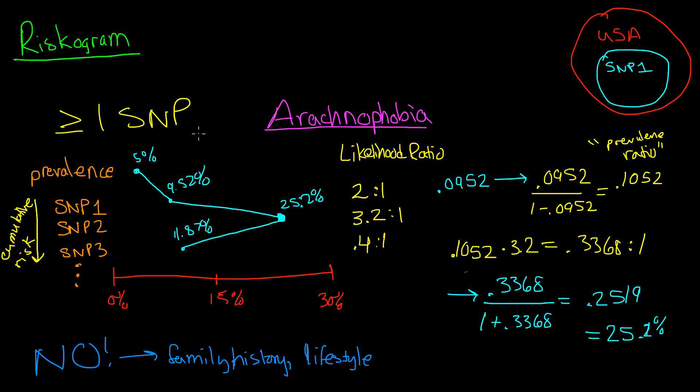So again, a riskogram is a way of portraying the genomic information and calculating someone's risk. But other factors, right now at least, tell us more, like family history and lifestyle.